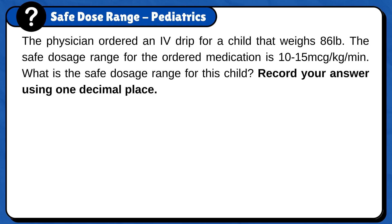In this exercise, the safe dosage range for this medication is between 10 to 15 micrograms per kilogram per minute. In other words, you will give 10 to 15 micrograms of medication for every 1 kilogram of the patient's weight per minute.